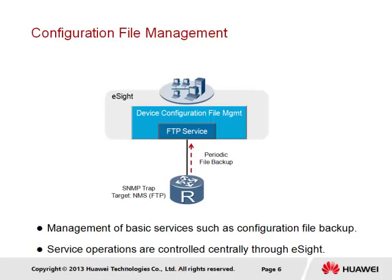A device may be configured to operate as an FTP server to support the backup and transfer of files for system updates. Through the NMS, it is also possible to provide the FTP service directly. SNMP traps can support the periodic backup of files to the FTP server within the NMS, provide backups when alarms are initiated, or even perform an instant backup each time file changes are made. The example demonstrates how a router is configured with an SNMP trap directed at the FTP service in the NMS, under the Device Configuration File Management component of eSite, to support periodic updates.